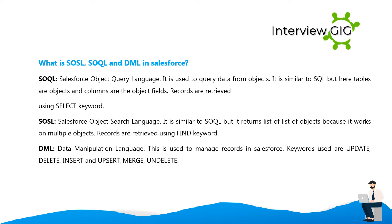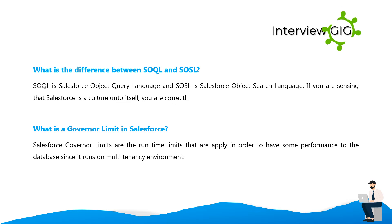What is SOQL, SOSL, and DML in Salesforce? SOQL (Salesforce Object Query Language) is used to query data from objects. It is similar to SQL, but tables are objects and columns are object fields. Records are retrieved using the SELECT keyword. SOSL (Salesforce Object Search Language) is similar to SOQL but returns a list of lists of objects because it works on multiple objects. Records are retrieved using the FIND keyword. DML (Data Manipulation Language) is used to manage records in Salesforce; keywords include update, delete, insert, upsert, merge, and undelete.